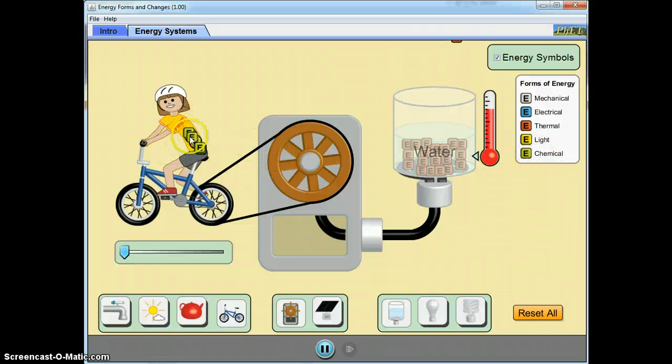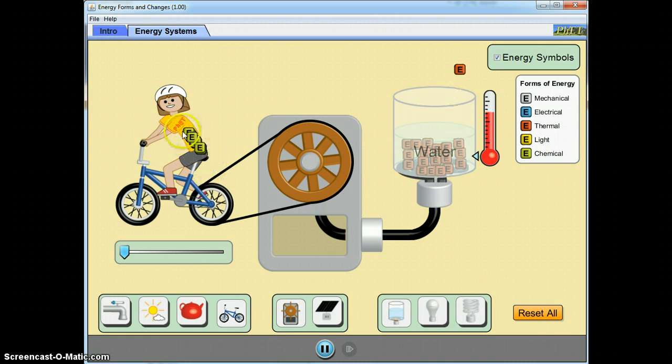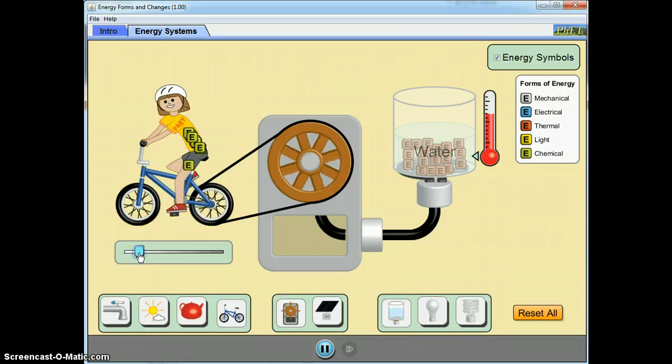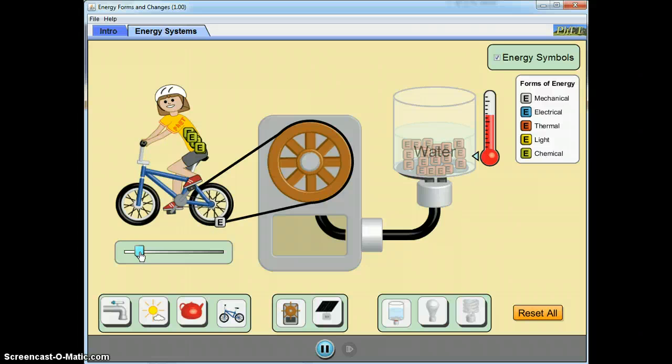This is green. This chemical energy is food. So we have a lot of energy stored in our food, and this girl has a lot of food in her belly, and she's now going to transform that energy from chemical energy, as you can tell, to mechanical energy.